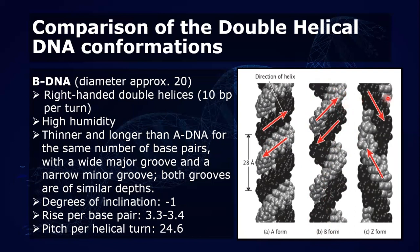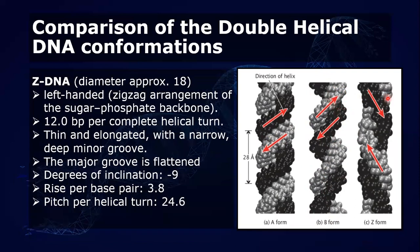Lastly, we have Z-DNA. It has an alternating pattern and is left-handed, meaning it has a zigzag arrangement of the sugar-phosphate backbone — this is why it's called Z-DNA. It has a very thin, elongated, narrow, and deep minor groove, while the major groove is flattened. That's how you compare the three DNA conformations.